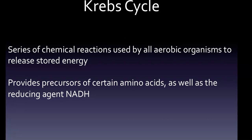The Krebs cycle, also referred to as the citric acid cycle, is a series of chemical reactions used by all aerobic organisms to release stored energy through the oxidation of acetyl-CoA derived from carbohydrates, fats, and proteins. In addition, the cycle provides precursors of certain amino acids as well as the reducing agent NADH, which are used in numerous other reactions.